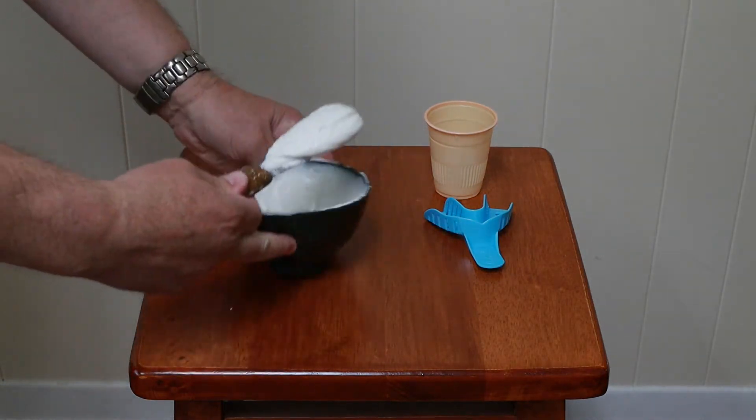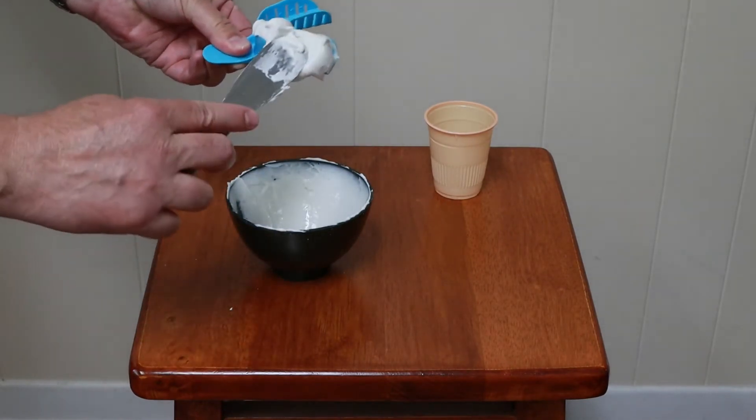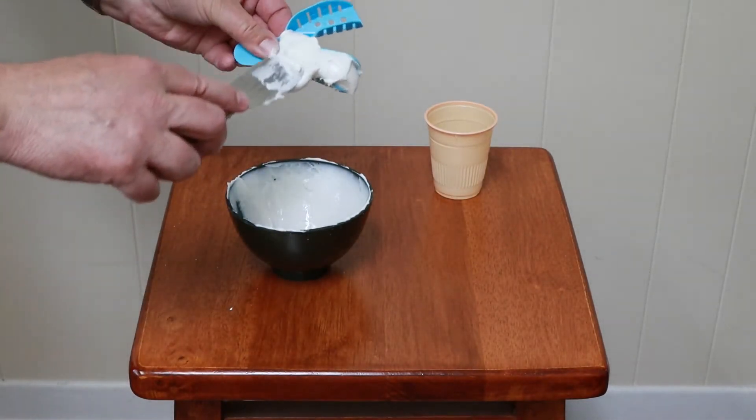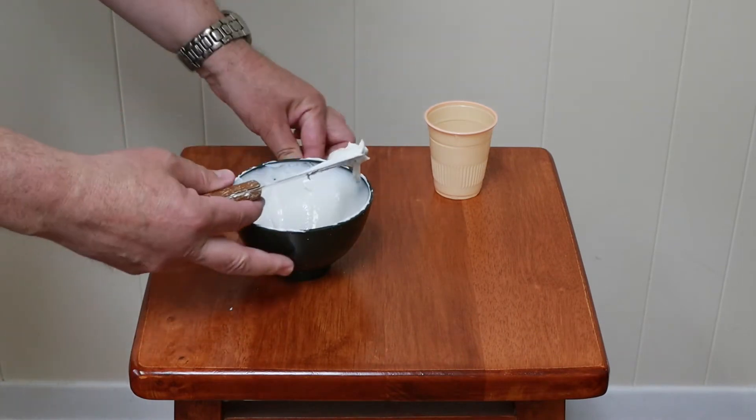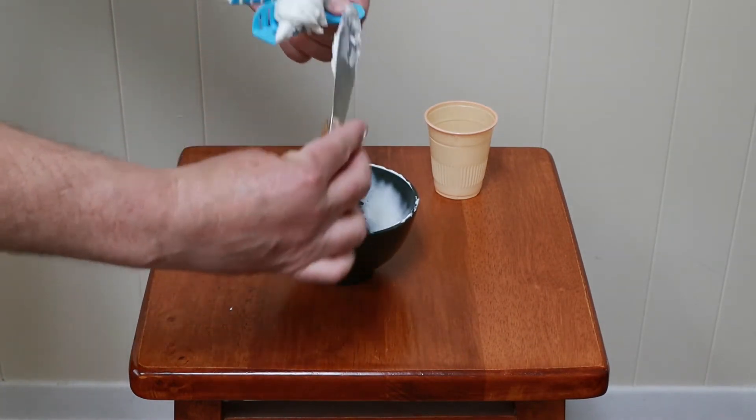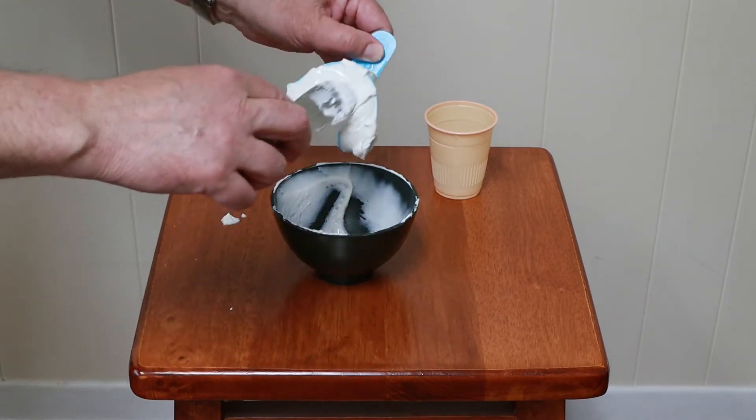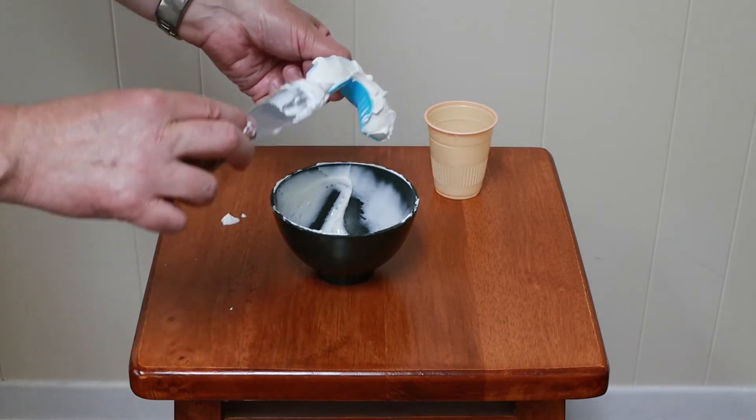load it up on the spatula, and place it in the tray. You don't want to overfill the tray. You want to fill it up just so that the tray is full, but you don't want to go too crazy, because if you sized your tray properly, that's all you're going to need is what's in the tray.